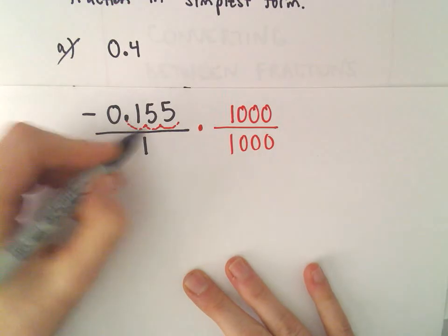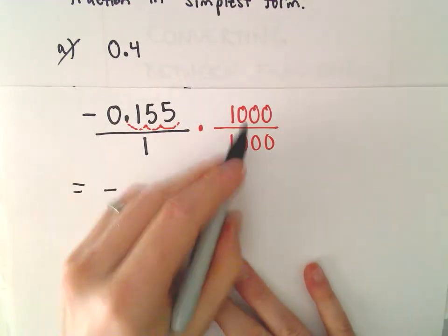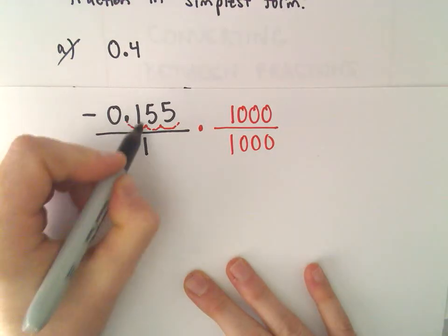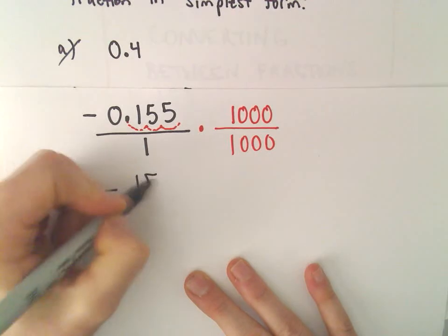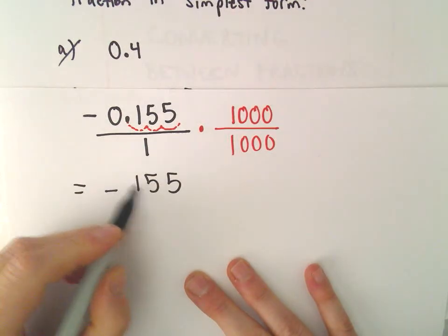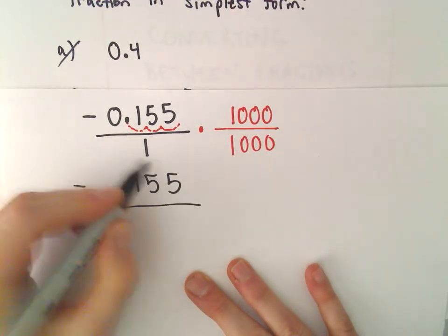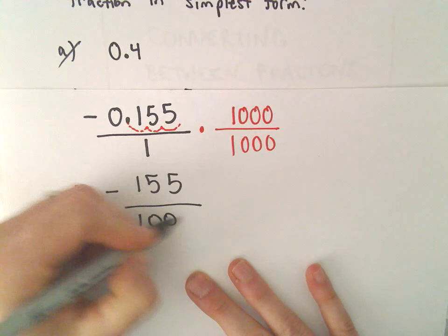Well, the negative is still going to be there. We said multiplying the numerator by 1000 will simply shift the decimal place over. So that's going to leave us with negative 155. And again, 1 over 1000 is simply 1000.